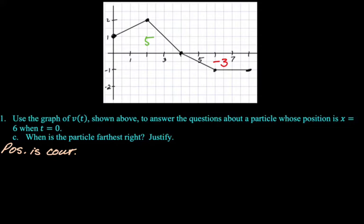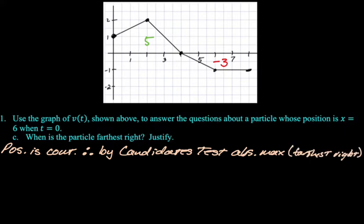I didn't feel like writing all that. Maybe you should do as I say, not as I do type of thing. All right, so we're going to use a candidates test. So the candidates test tells us that the absolute max or min are an endpoint or a critical point. In this case, the absolute max is actually the farthest right that you're going. So we're looking for the farthest right. That'll be the absolute max. That's going to be an endpoint or a critical point.